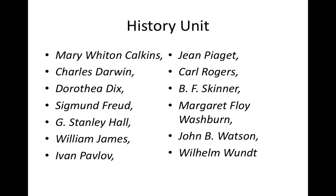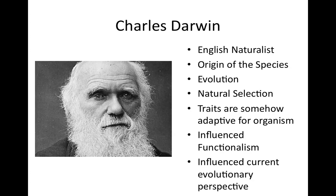Here's what we have to know from the history unit — a nice long list of psychologists and others who influenced early psychology. First is Charles Darwin, an English naturalist who sailed around the world and wrote 'On the Origin of Species.' He wrote of evolution and natural selection — the idea that traits are adaptive for an organism and get passed along to surviving members of a species. He influenced the early school of functionalism and the current evolutionary perspective of psychology.